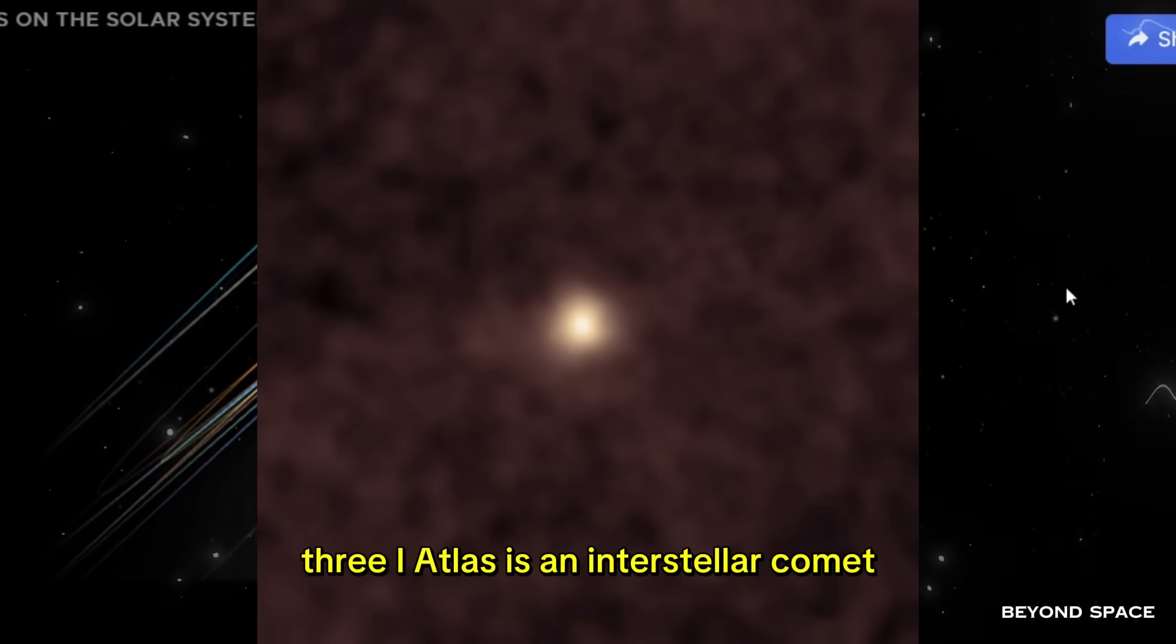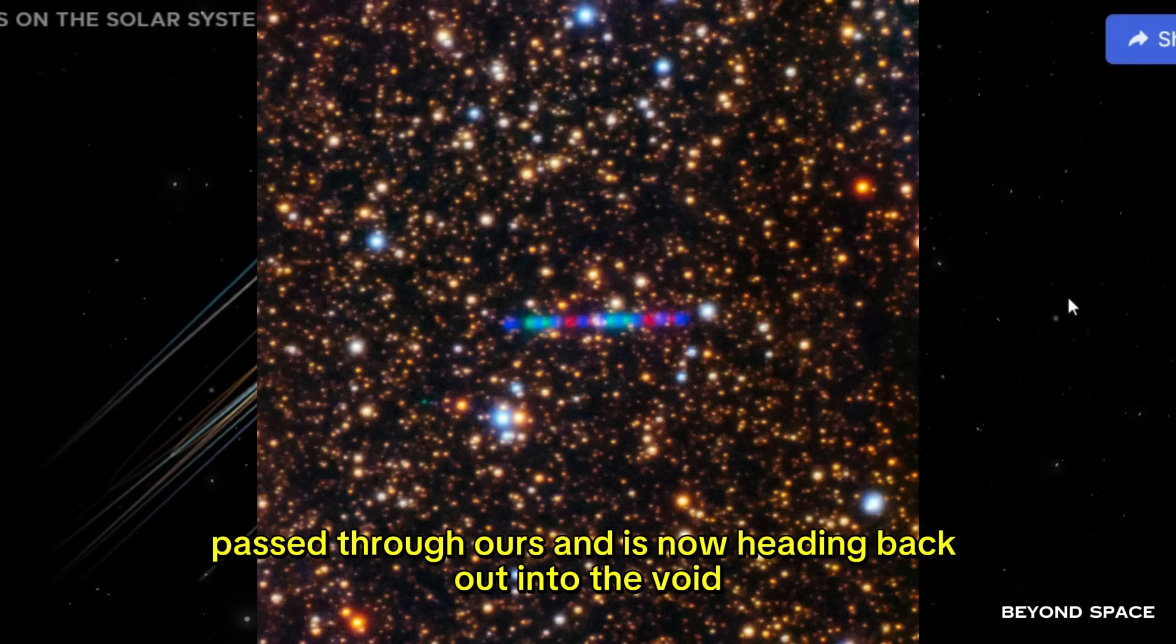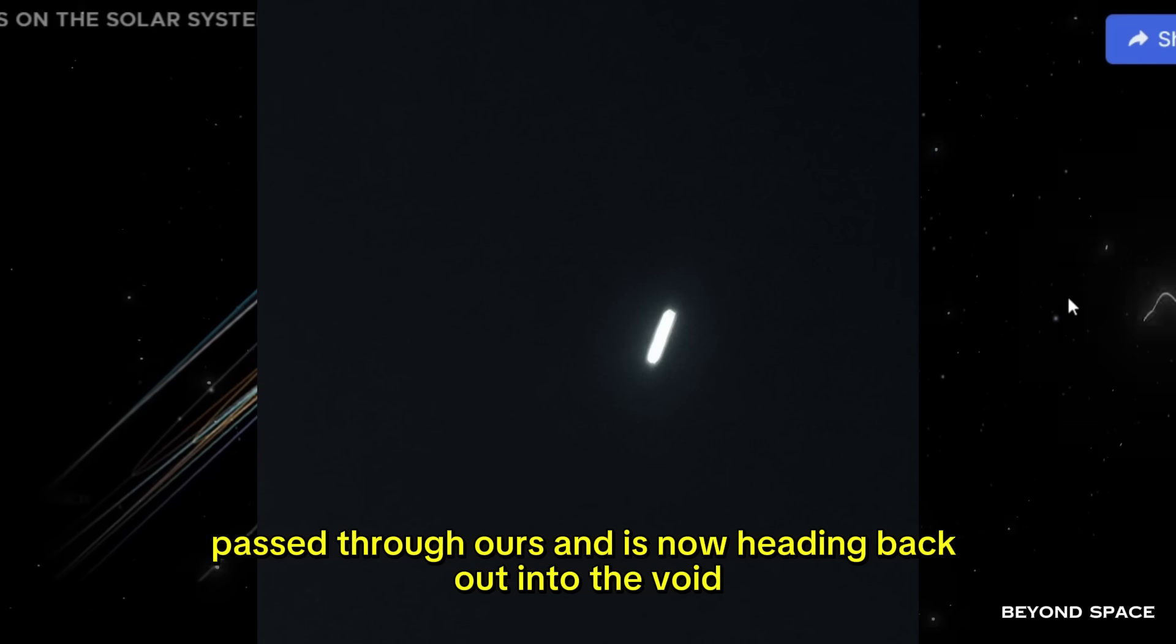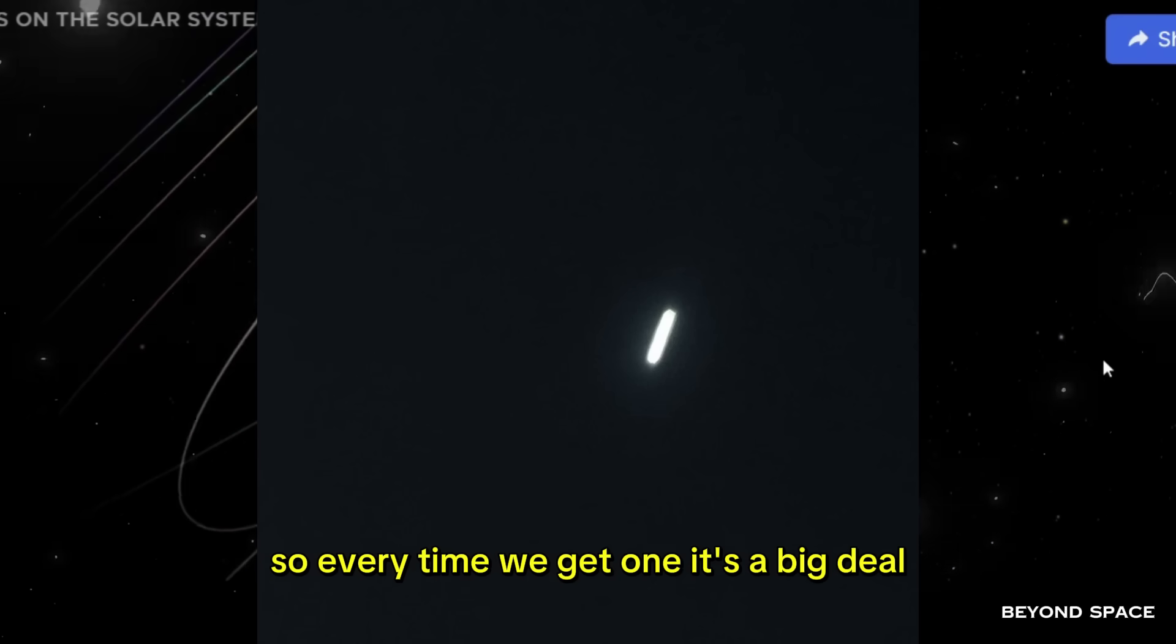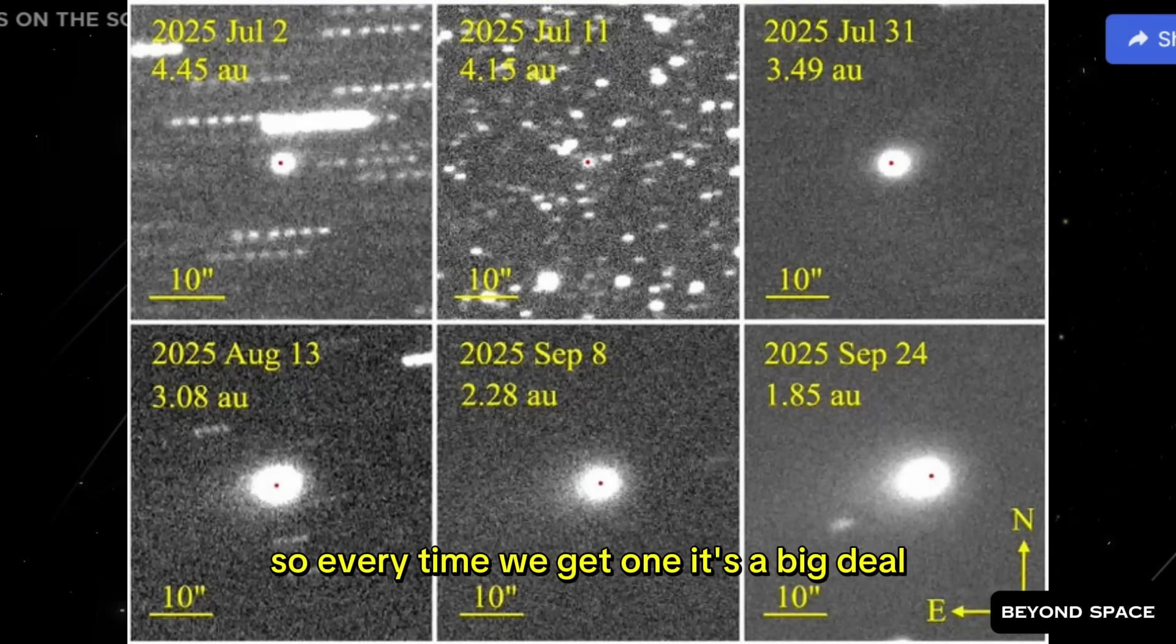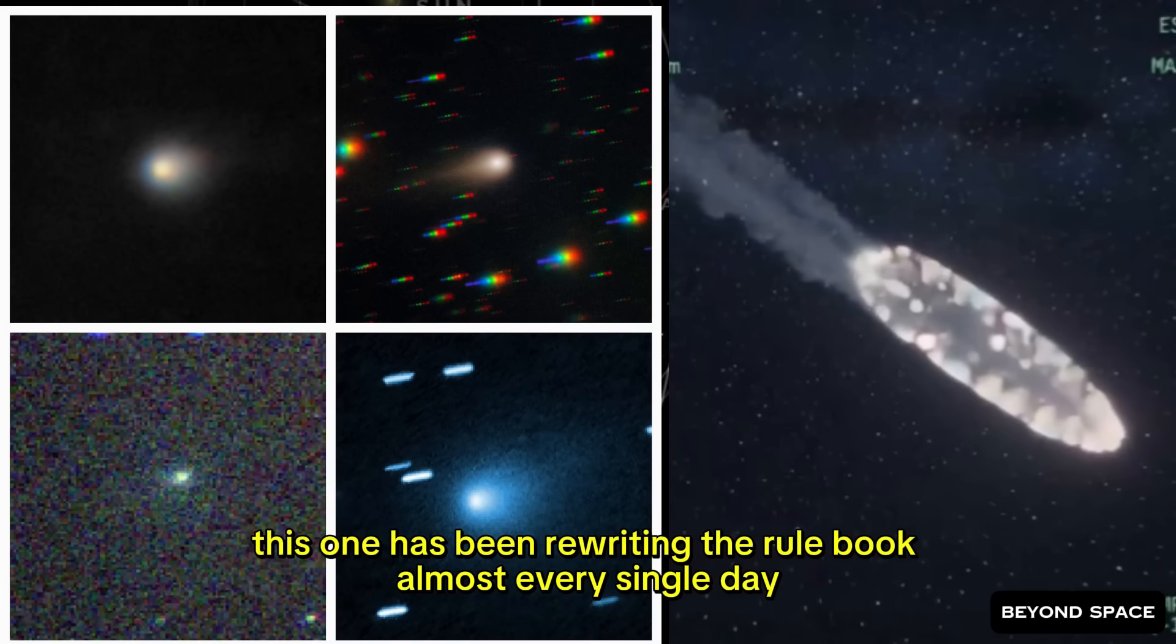3i Atlas is an interstellar comet. That means it came from another star system, passed through ours, and is now heading back out into the void. We've only ever confirmed a handful of these objects, so every time we get one, it's a big deal. But this one? This one has been rewriting the rulebook almost every single day.